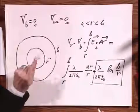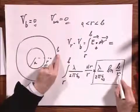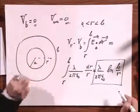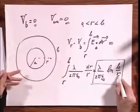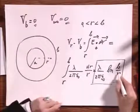And if you want to know what it is at R equals B, well, you put in R equals B, and what do you find? No surprise. The logarithm of 1 is zero. It's exactly what we had. If you want to know what the potential is at R equals A, then you put in R equals A, and you find here B over A.